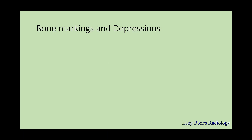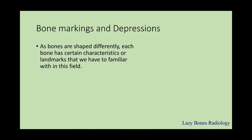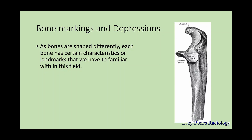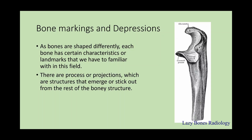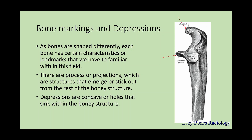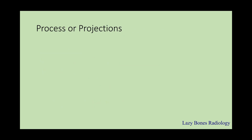Bone markings and depressions — the final stretch. As bones are shaped differently, each bone has certain characteristics or landmarks we must be familiar with in this field. Processes and projections are structures that emerge or stick out from the rest of the bony structure. As you can see here, the coronoid process and the olecranon process of the ulna stick out from the regular bone. Depressions, on the other hand, are concavities or holes that sink within the bony structure, as you can see in the semilunar notch of the ulna.